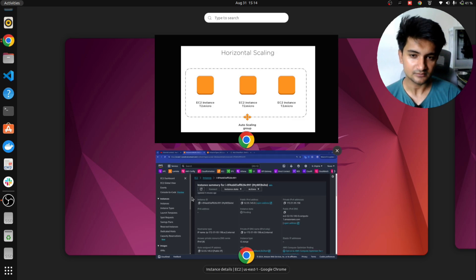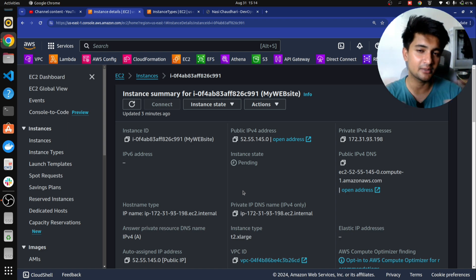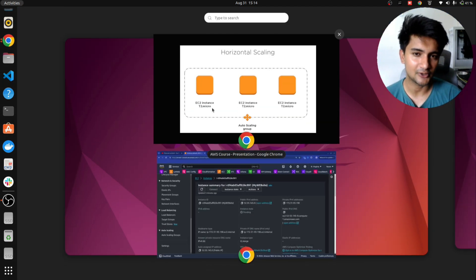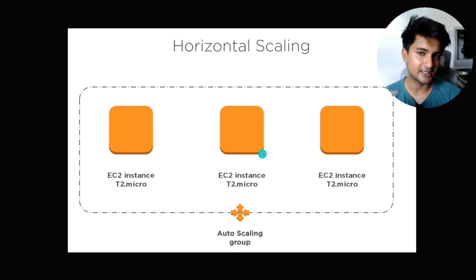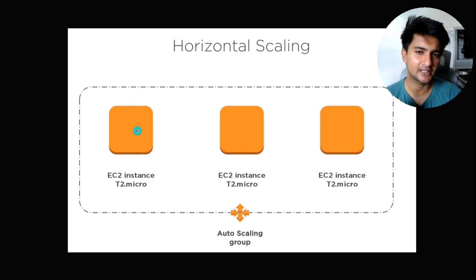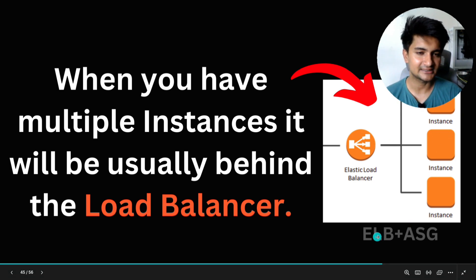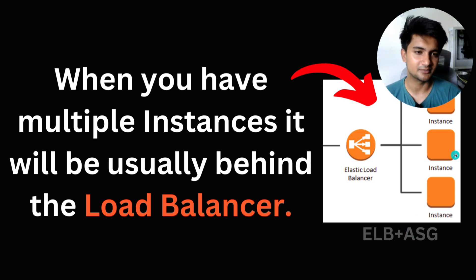You can create similar instances multiple times — for example, four T2 micro instances serving the same website — so that when traffic increases, it can be distributed among different backend servers. You can distribute traffic using a load balancer. With horizontal scaling, new instances are created automatically using an Auto Scaling Group. Since these instances have their own IP addresses, you need a single endpoint like a load balancer. Multiple instances will usually be behind a load balancer and created using an Auto Scaling Group.